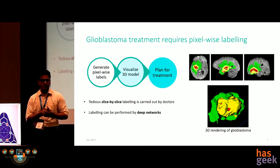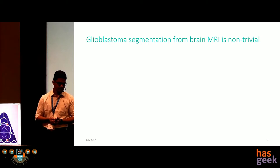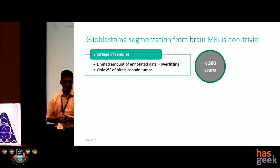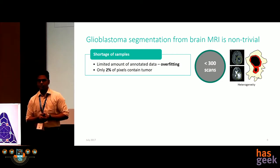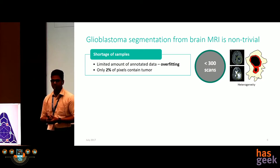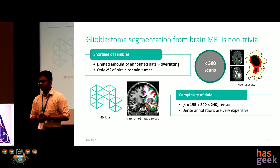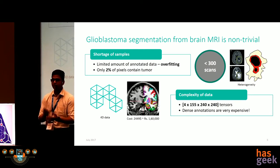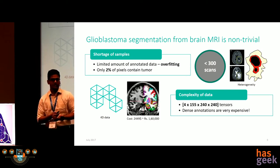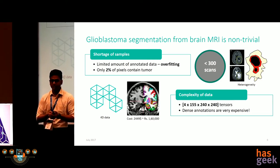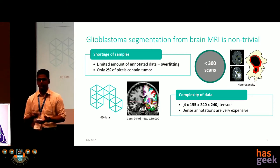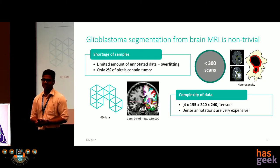We hypothesize that this labeling can be done by deep neural networks. But there are multiple problems with glioblastoma segmentation from MRI — it is extremely non-trivial. We have a shortage of samples: our dataset was just 300 scans, and only 2% of pixels contain tumor. The tumors are extremely heterogeneous, and you have to understand the entire mapping of cancer from just 300 patients. Furthermore, we are dealing with 4D tensors — four sequences of 3D images. Dense annotations are also extremely expensive: a neurosurgeon offered to sell labeled annotations for $2,500 per scan, which is not scalable.